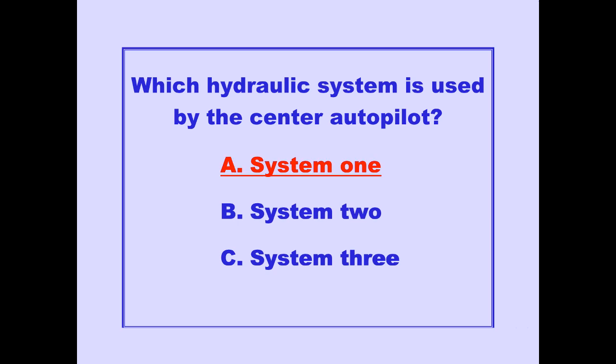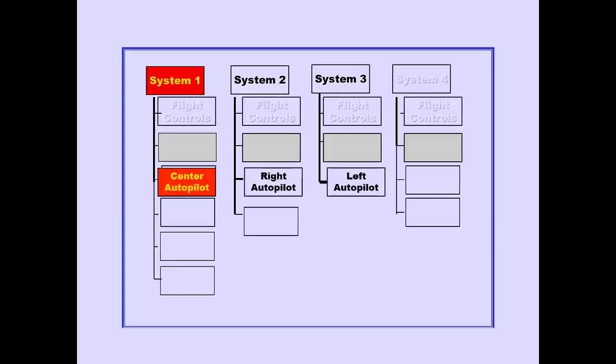Answer A is correct. The center autopilot uses hydraulic system 1. System 2 is used by the right autopilot, and system 3 is used by the left autopilot.